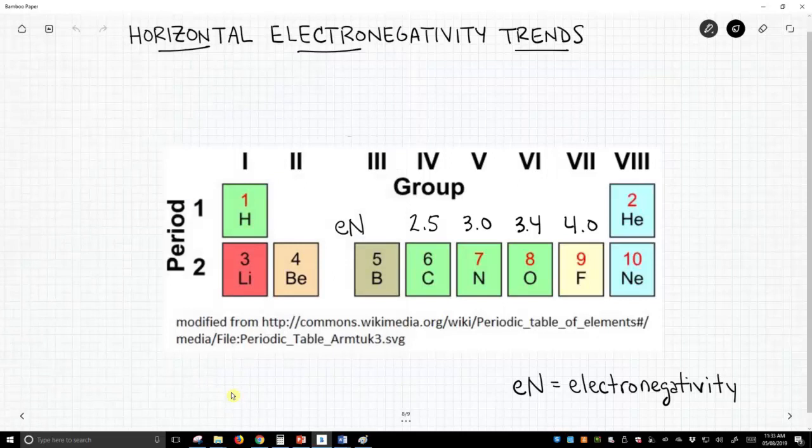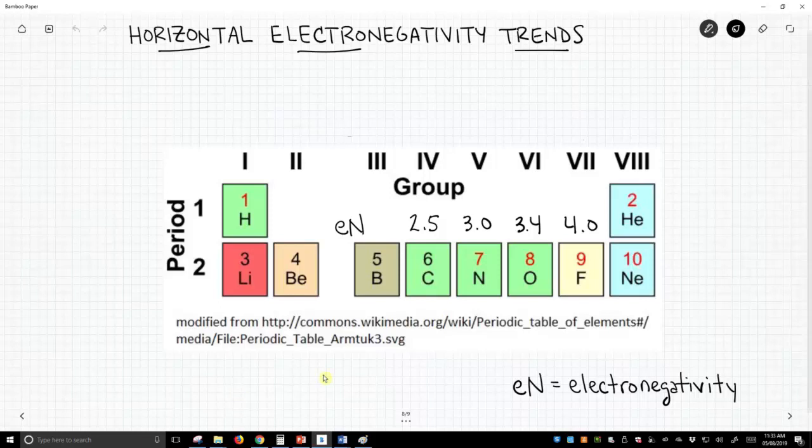On the screen we have a small snippet of a periodic table showing the first and second rows, with electronegativity values written.